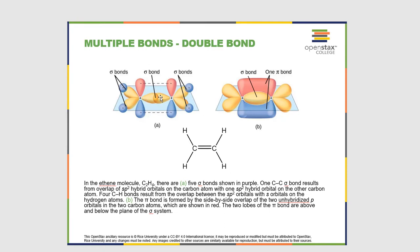You might ask yourself, what happened to that other p orbital? If it's sp2 hybridized, that means there's an unhybridized p orbital. That unhybridized p orbital is shown here in red and blue — on this carbon and on the other carbon. A pi bond occurs above and below the atom in these unhybridized p orbitals. So in ethylene you have one sigma bond and one pi bond, and the pi bond occurs in unhybridized p orbitals.